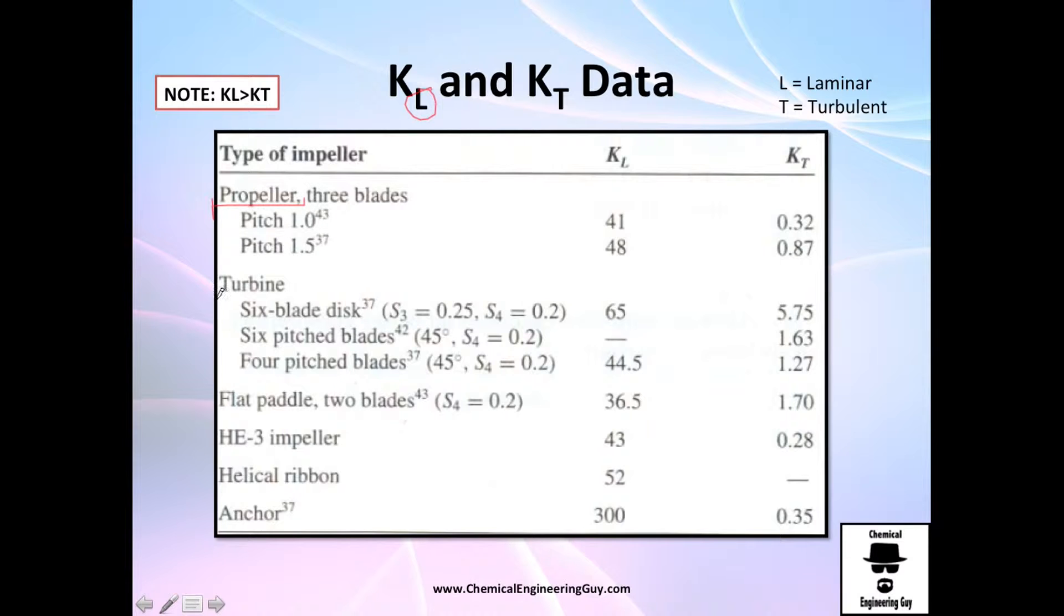We have this type of impellers—of course we need to know if we are working with propeller, turbines, or paddles. For high viscosity, the anchor, vertical ribbon, or impellers. For three-bladed, we have a pitch typically between 1 and 1.5, and we have a number of K in laminar flow between 41 and 48. For a turbine, you have either six blades or four blades, and you have these sizes you need to check out. The numbers are also between, probably...